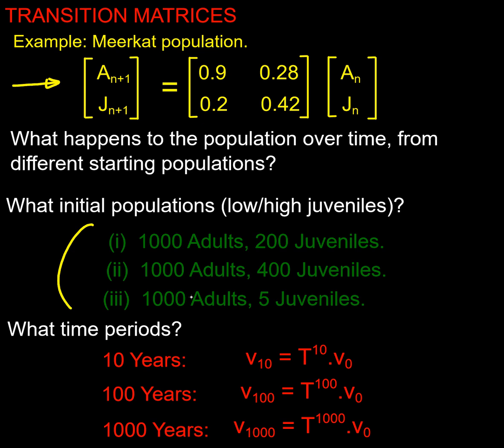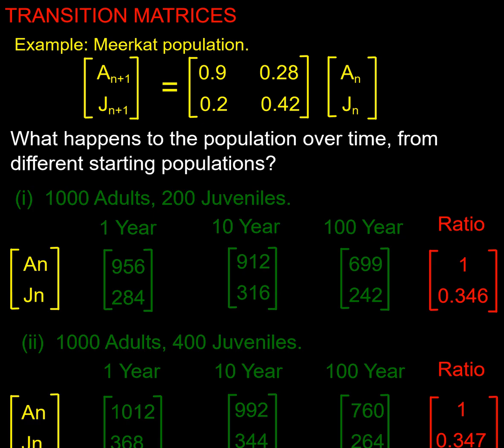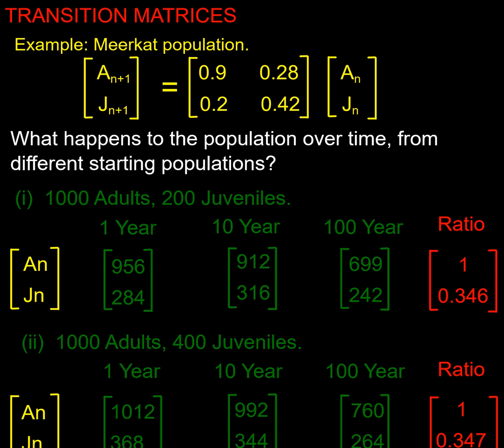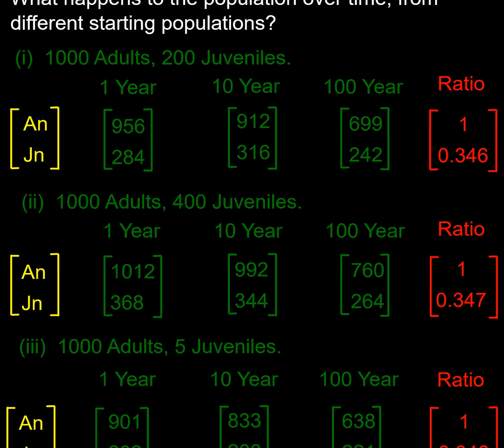What I'm going to do is try three different population setups, and really it's the ratio of adults to juveniles. I'm going to use 1000 adults and either 200 juveniles as the midpoint, 400 as a high point, or 5 as a low point. I'm going to start by looking at what happens over 10 years and 100 years by just doing the multiplications.